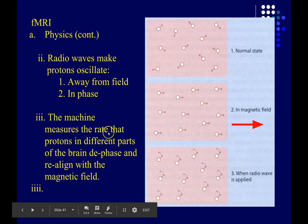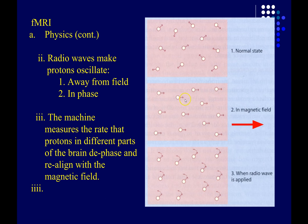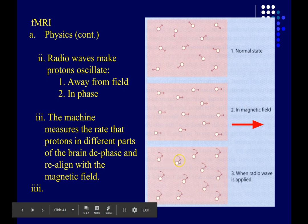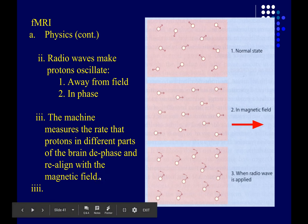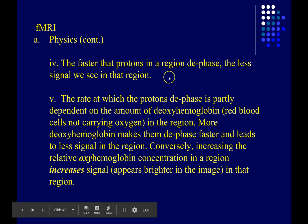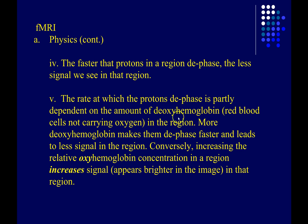Then the MRI machine listens for an echo. Just as those radio waves were sent in and caused these little magnetic fields to oscillate in synchrony with one another, they can emit a radio frequency echo, which is picked up by the same antenna that was used to make the radio waves. It turns out that the rate at which these things dephase — the rate at which they go out of phase — is dependent on the local magnetic field.